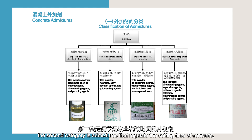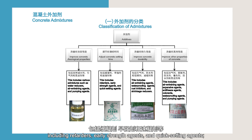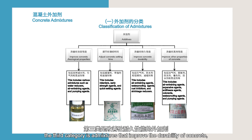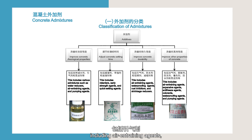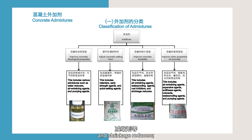The second category is admixtures that regulate the setting time of concrete, including retarders, early strength agents, and quick-setting agents. The third category is admixtures that improve the durability of concrete, including air-entraining agents, waterproofing agents, rust inhibitors, and shrinkage reducers.